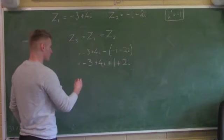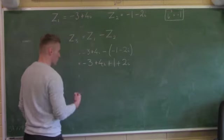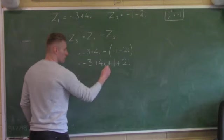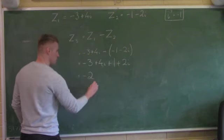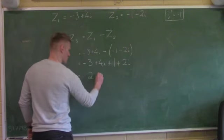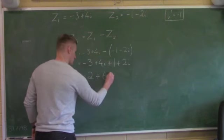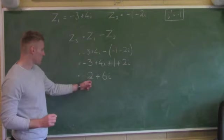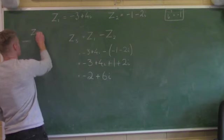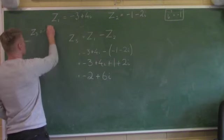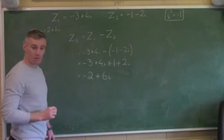Now on the final line, I add my numbers and add my i's. I have negative 3 plus 1, that gives me minus 2. Plus 4i plus 2i — 4 plus 2 is 6, so I have 6i. My answer for that part is minus 2 plus 6i. Z3 equals minus 2 plus 6i, and I'll need that for the next part.